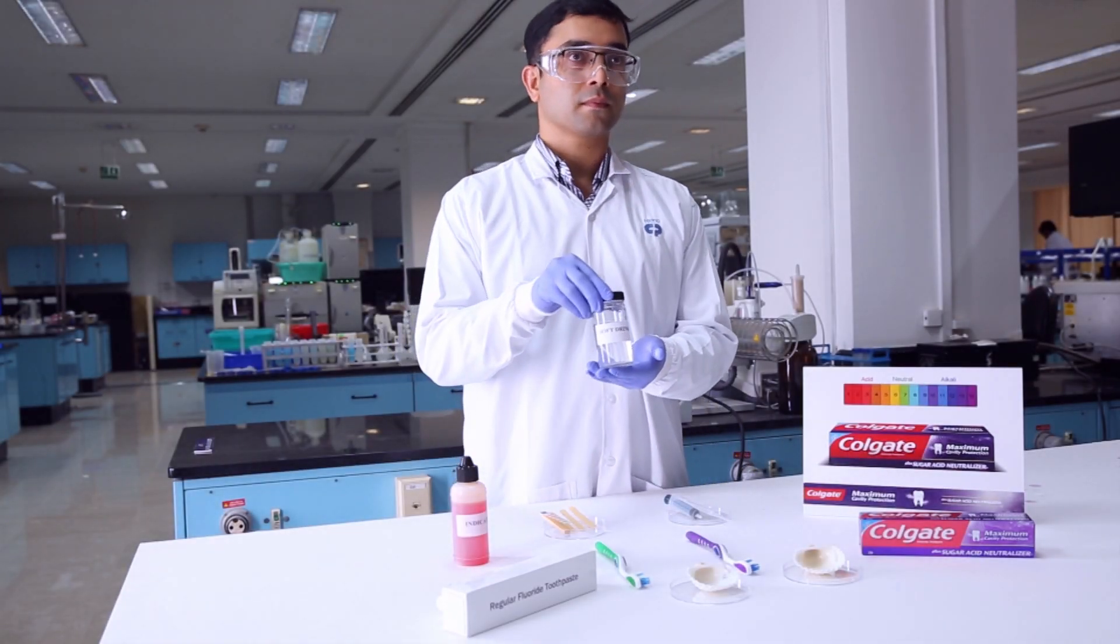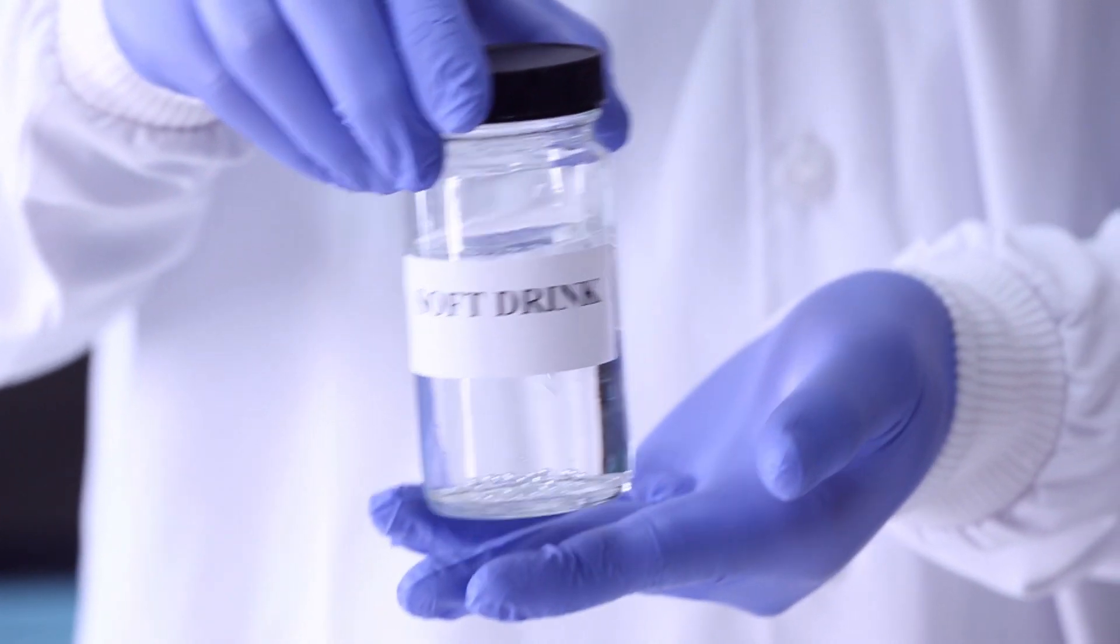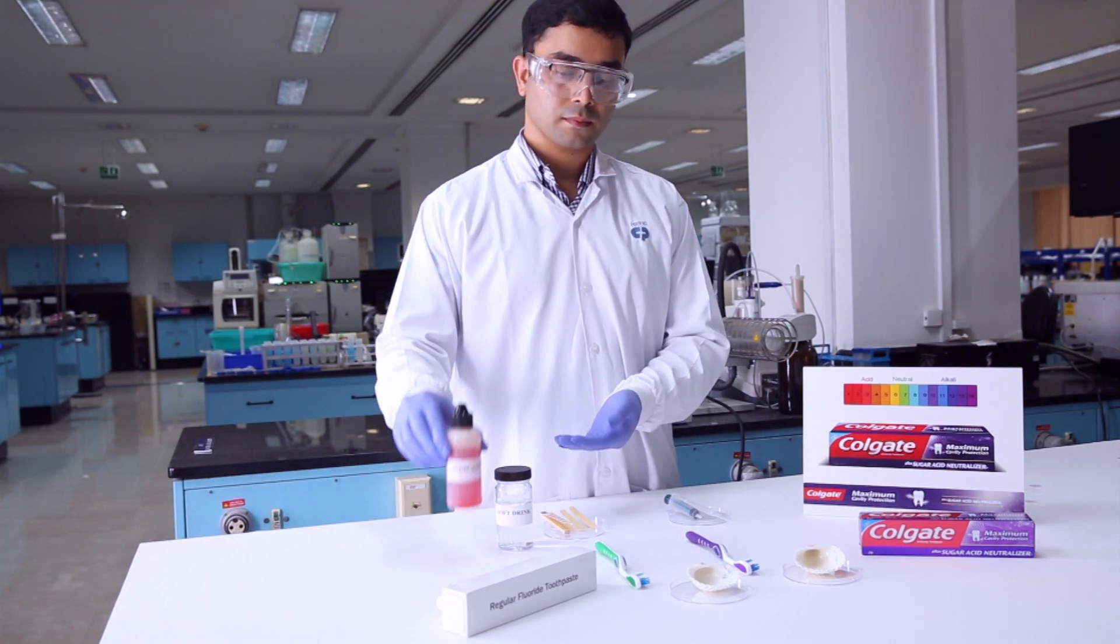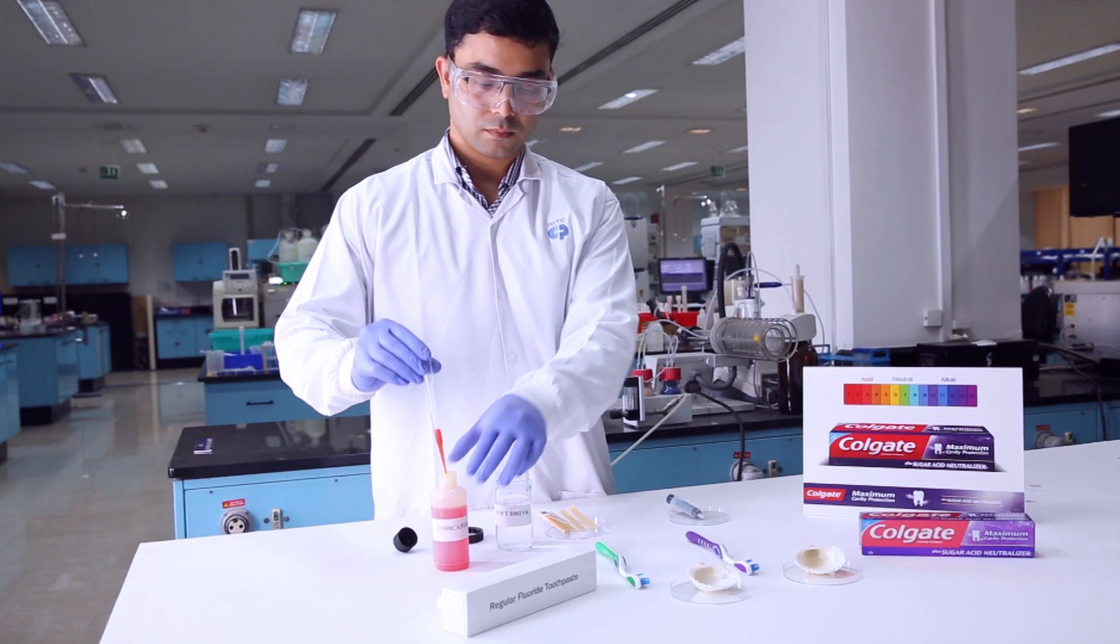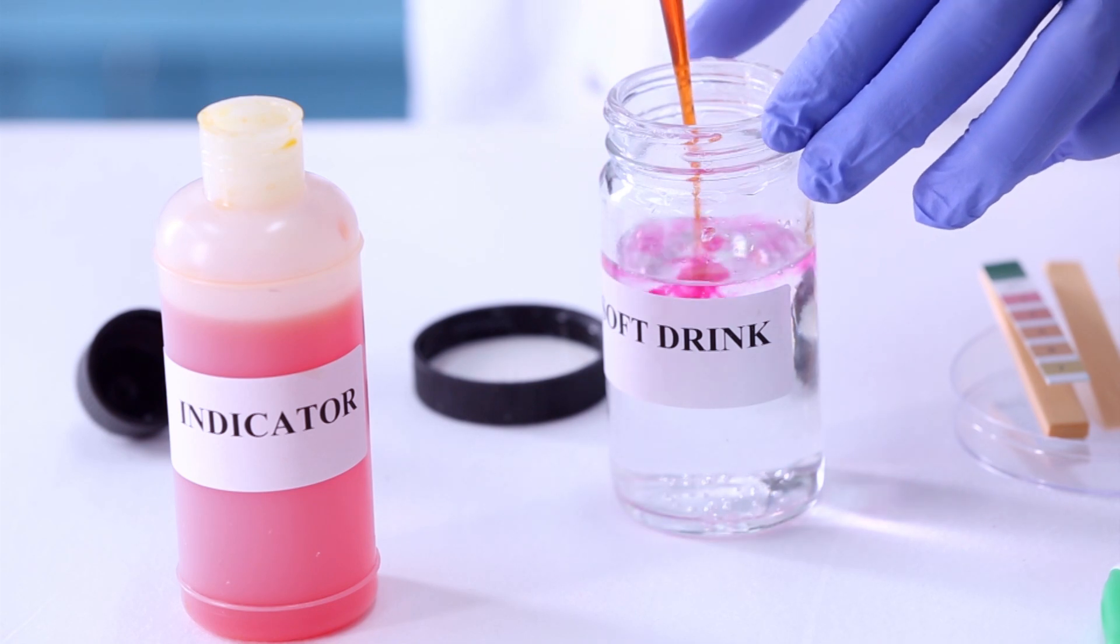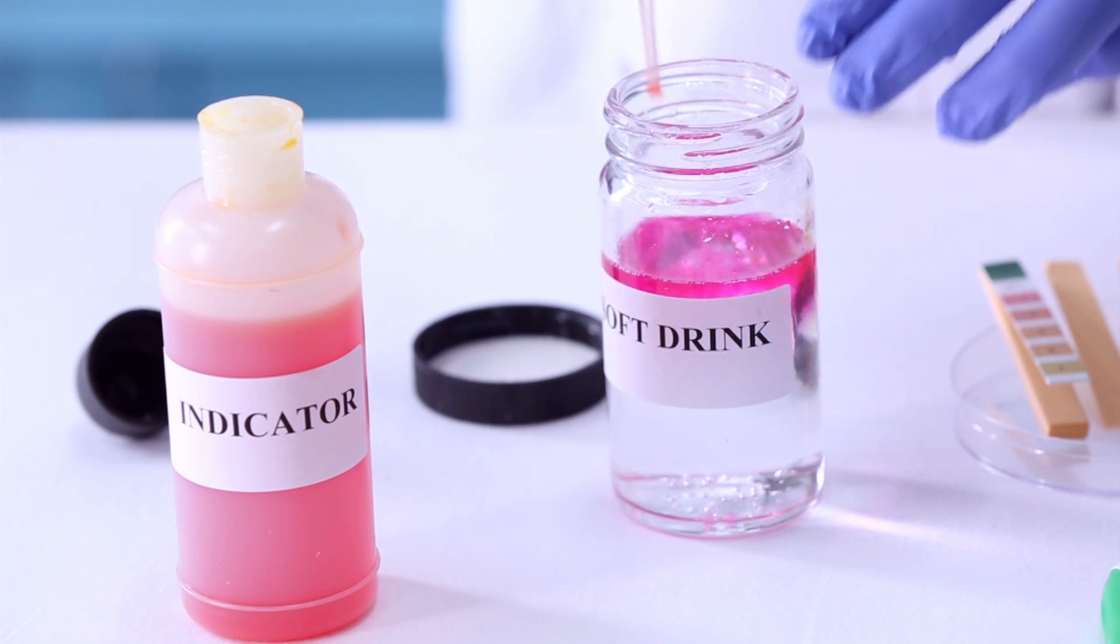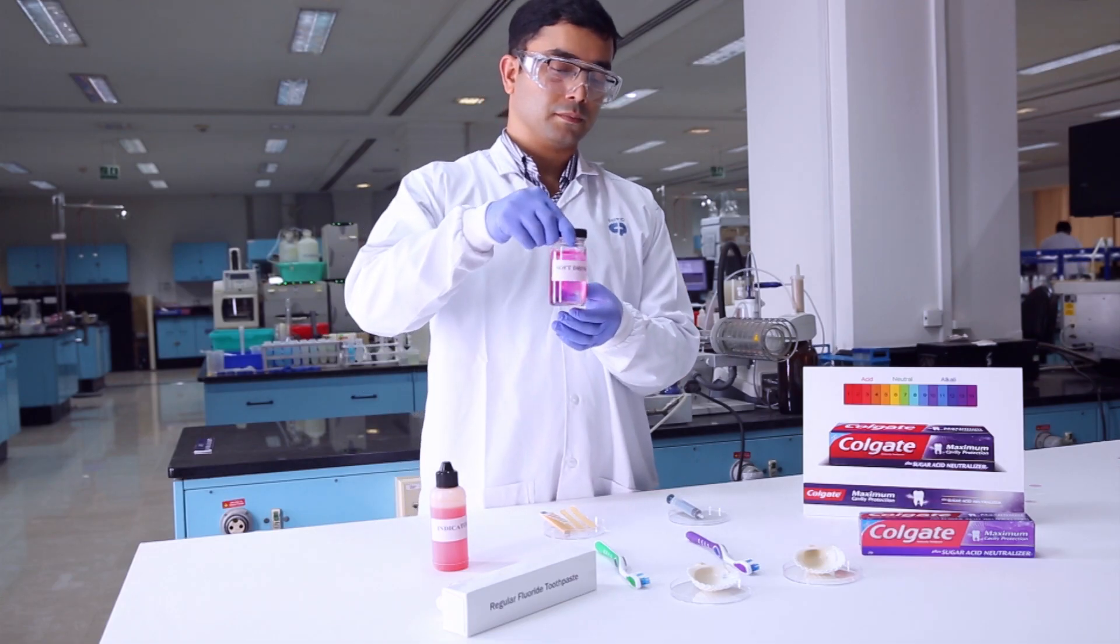Here, we have a bottle containing soft drink to represent sugar acid. To this, we add a few drops of indicator. This chemical reagent turns acidic solution pink and neutral solution colorless. The pink color shows that this solution is acidic.